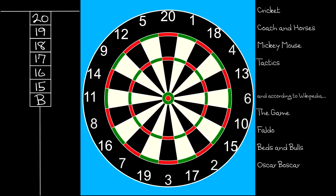But before we go any further, let's discuss the name Cricket. In England, of course, Cricket refers to an entirely different game that has nothing to do with darts. When I lived there, I knew the darts version of the game as Coach and Horses or Mickey Mouse. According to Wikipedia, it may also be called Horse and Carriage, The Game, Faldo, Beds and Bulls, Oscar Bosker, or Pointy Throwers. Personally, I've never heard any of these names used, and some of them sound rather contrived. When I played league darts in the Netherlands, the game was called Tactics, and we played the numbers 20 down to 10 plus bull. But for this video, I'm sticking with the name Cricket as used in America, and I shall focus mainly on the version of the game that involves the numbers 20 down to 15 plus bull.